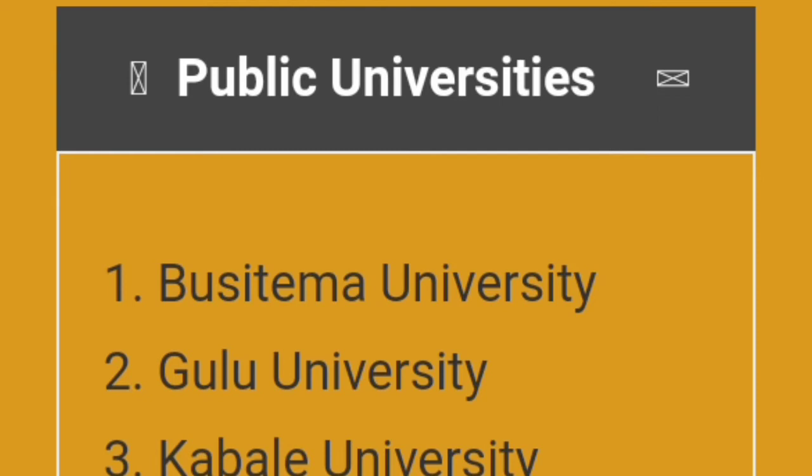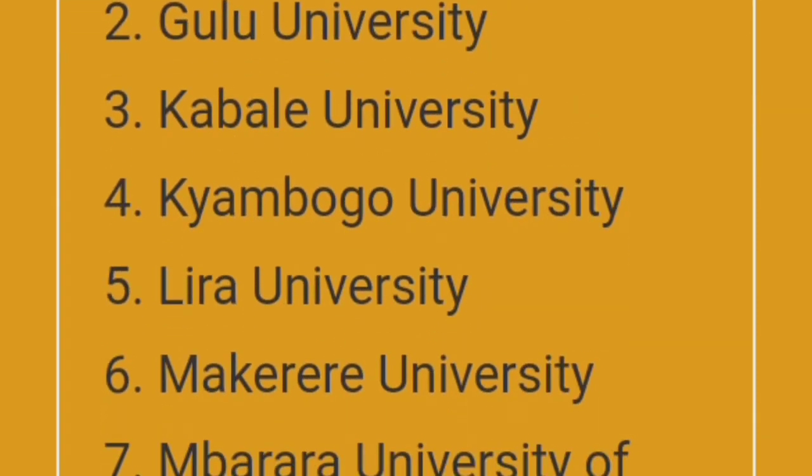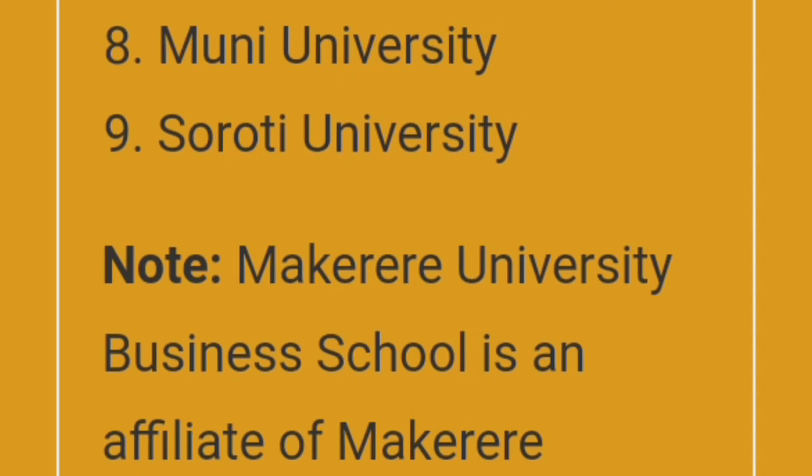For public universities it has to be: Busitema University, Gulu University, Kabale, Kyambogo, Muni, Makerere, Mbarara, Soroti. Note that Makerere University Business School is an affiliate of Makerere University. These are the universities where you have to take your undergraduate courses.